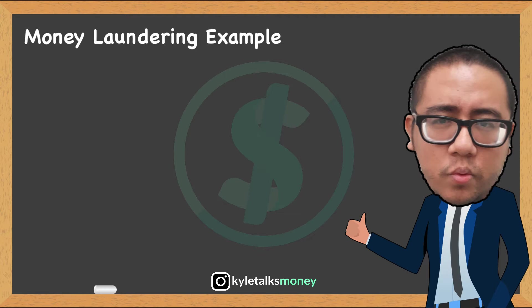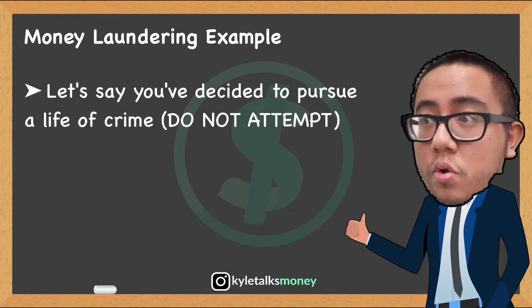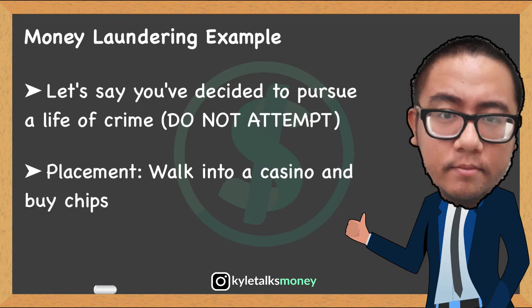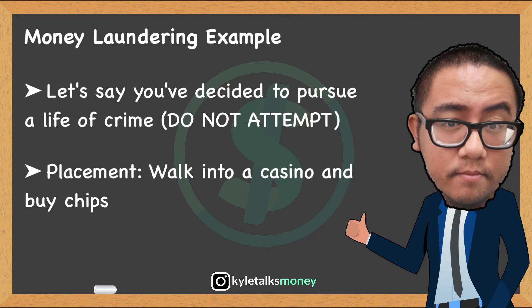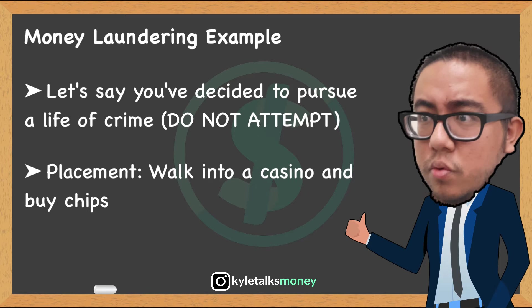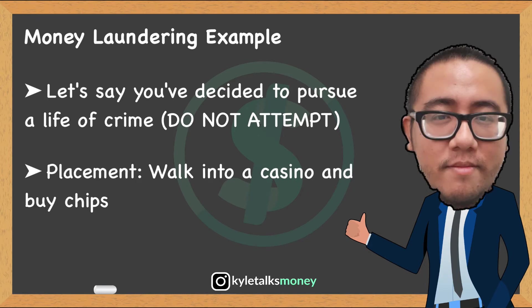Let's say you've decided to pursue a life of crime and suddenly have one million dollars in cash. This dirty money is too dangerous to spend openly without getting caught. Step one — placement: you walk into a casino with cash and buy chips, play for a while, put down a few small bets, then cash in your chips and take payment in the form of a check. Now you can deposit the check into a bank as gambling winnings.